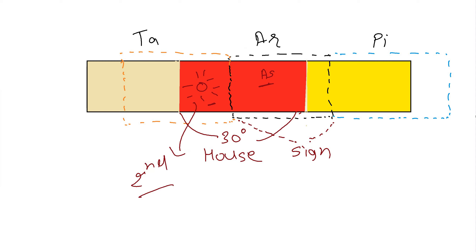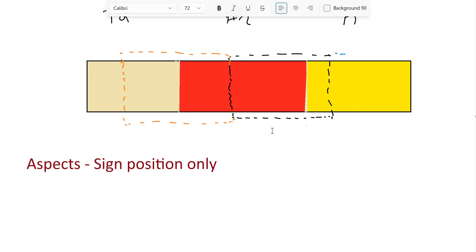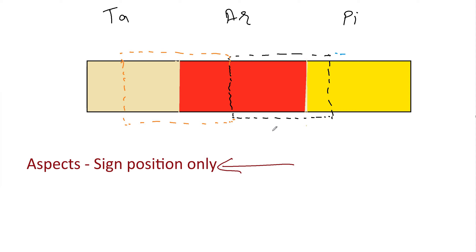Now in this situation, what results are you going to get? First, something very clear: whenever you are looking at aspects — say Sun aspects the seventh house or Jupiter aspects the fifth house — aspects in most schools of traditional astrology are taken from sign position only. It doesn't matter even if in the bhava chart a planet goes to some other house; aspects — aspecting the fifth house, third house — are all from the sign position.